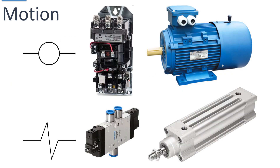The symbols on prints for any coil — relay, starter, or otherwise — is a circle with two lines. The solenoid symbol, even though that solenoid is actually a coil of wire, is drawn with a different symbol.